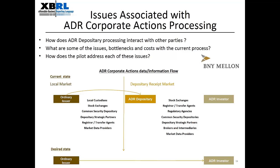The current process, even with the significant changes we made within our new system, had many inconsistencies and pain points. We send announcements to the New York Stock Exchange via an FTP process, we manually entered data into FINRA's website, and prior to late 2012 we were emailing PDFs to all other ADR parties. What are some of the issues, bottlenecks, and costs? Different file formats for different players.